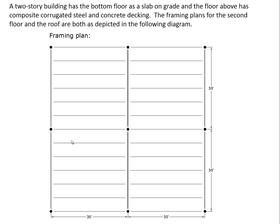We're going to focus on a two-story building that has a bottom floor that's a slab on grade, one elevated floor above that with composite corrugated steel and concrete decking, and then a roof above that. The framing plans for both the second floor and the roof are both as depicted in the following diagram.